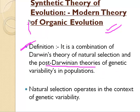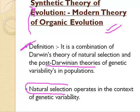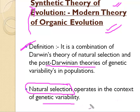We will see what post-Darwinian theories are combined with Darwin's theory to form the synthetic theory of evolution. Darwin was not able to explain the context of natural selection. The synthetic theory is able to tell that the context of natural selection is genetic variability. Genetics was not known during Darwin's time but was known later.